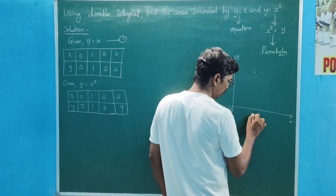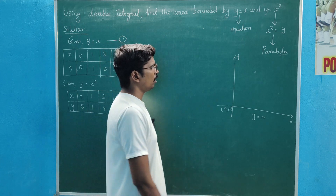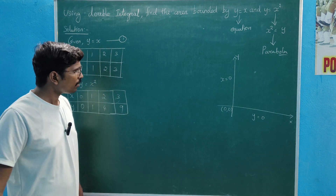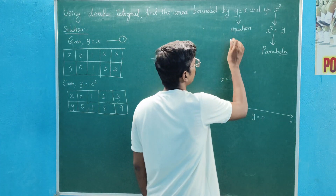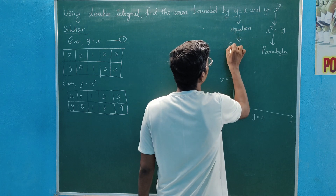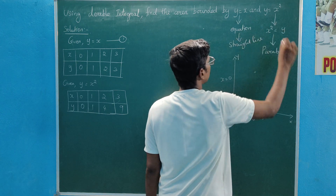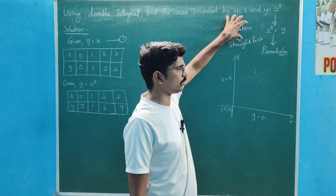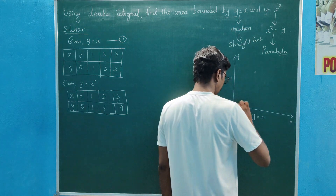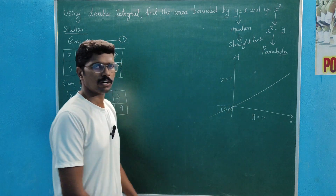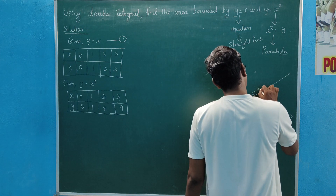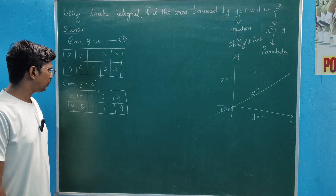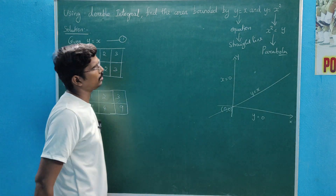On the x-axis, y equal to zero. The straight line equation y equal to x is a linear equation. So y equal to x — passing through origin (0,0) — is a straight line going in this direction.